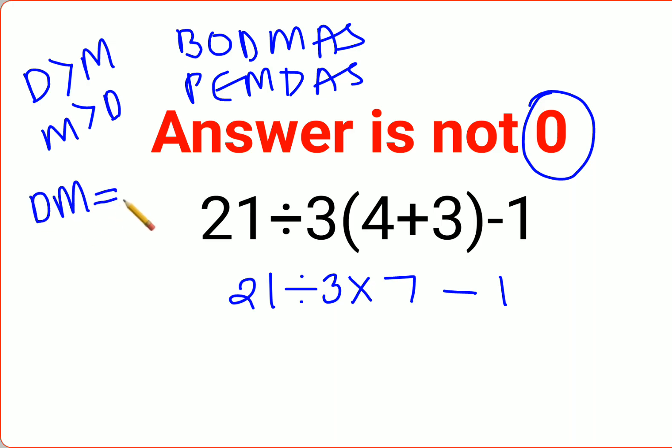So in sums like these you just go from left to right. Whatever operation happens first on your left hand side has to be done first. So 21 divided by 3 is 7 multiplied by 7 minus 1.